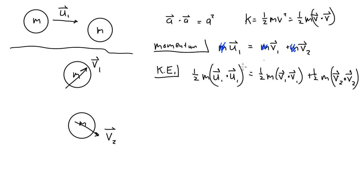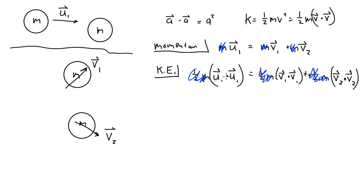We cancel the one-half m factors throughout both equations. From momentum conservation we get u1 = v1 + v2. We then substitute that in for u1 in the kinetic energy equation.